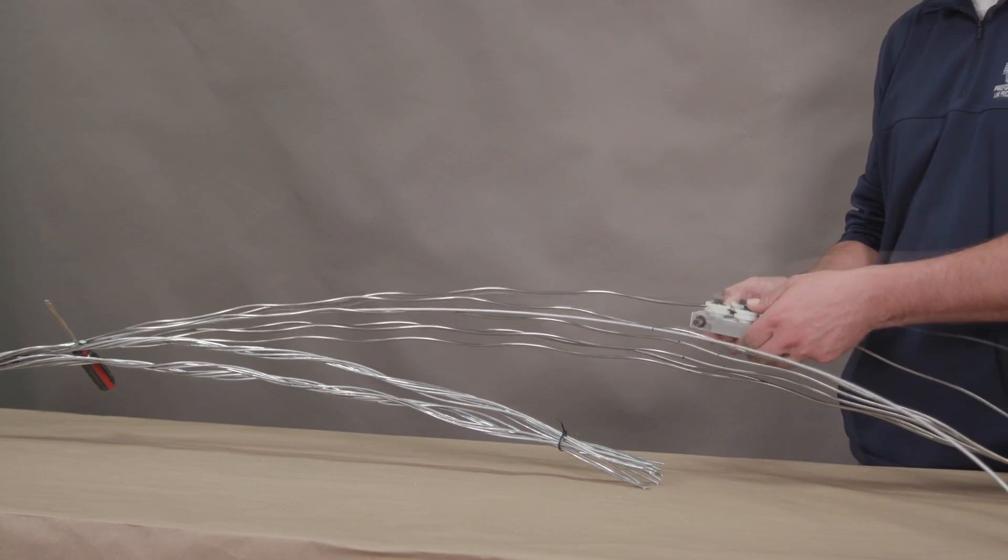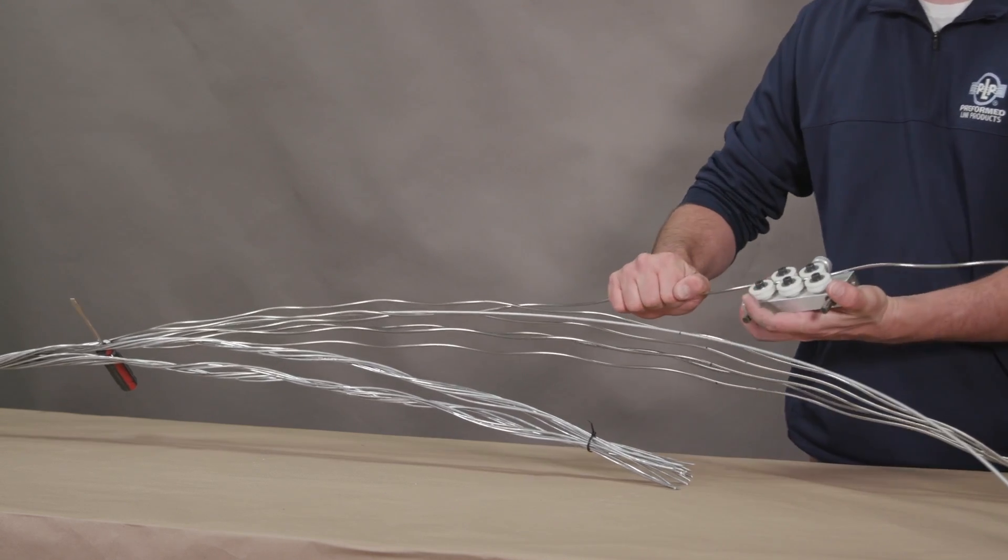Use the buffer tube straightening tool to straighten the buffer tubes from the outer marked location.